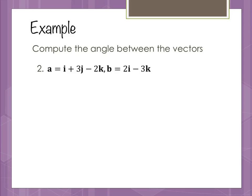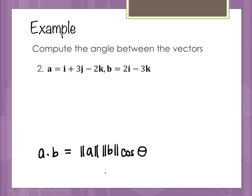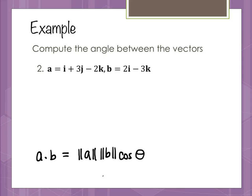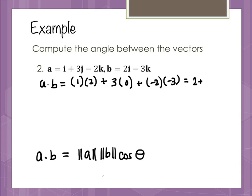This example asks us to compute the angle between vectors a and b. The formula we want to use is: a dot b equals magnitude of a times magnitude of b times cosine of theta. We need to find all those individual pieces and then solve for theta. Starting with a dot b: component-wise this is 1 times 2, plus 3 times 0 — there's no j component in b — plus negative 2 times negative 3, giving us 2 plus 6, or 8.